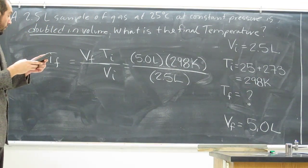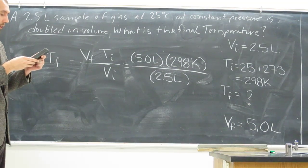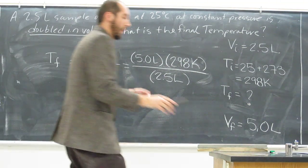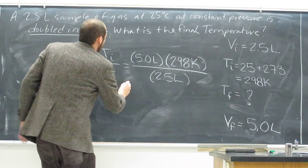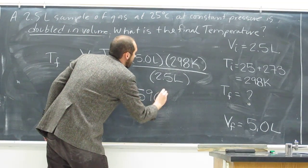And if we multiply and divide those numbers, we should get the right answer. 5 times 298 divided by 2.5, which is 596 Kelvin.